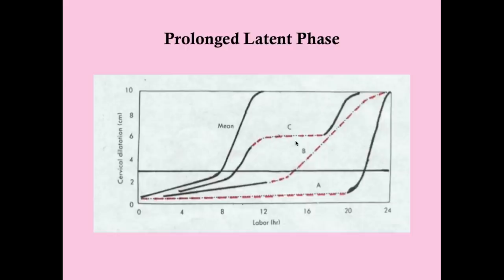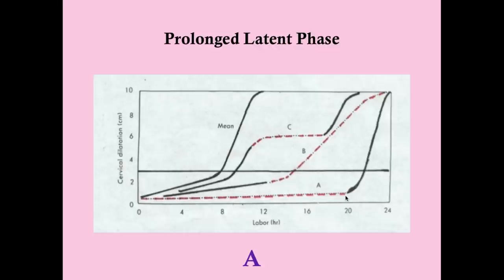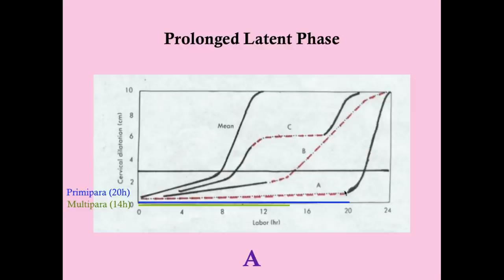Looking at the graph, which curve — A, B, or C — is prolonged latent phase? The answer is A. Note that three to four centimeters is our cutoff between latent and active stage one, and curve A shows the patient spending a very long time in the latent phase. At 20 hours — the cutoff for a primapara — she's still in the latent phase. For a multipara, the cutoff is 14 hours, so she would be considered prolonged latent phase even earlier.